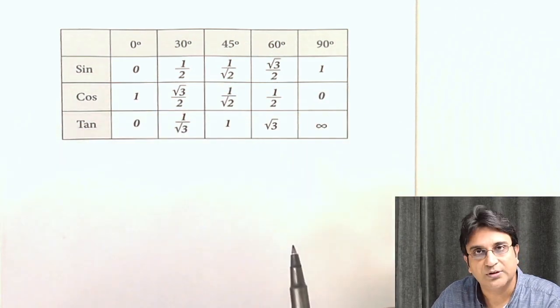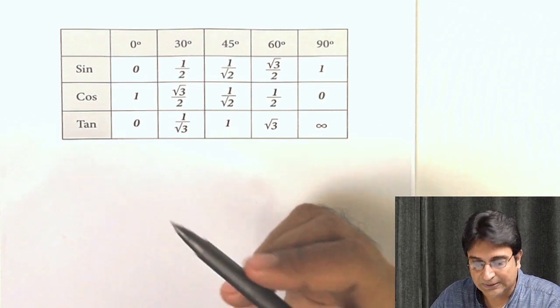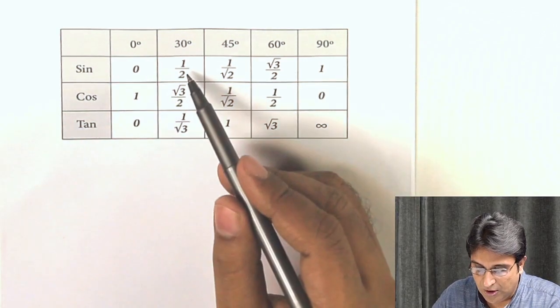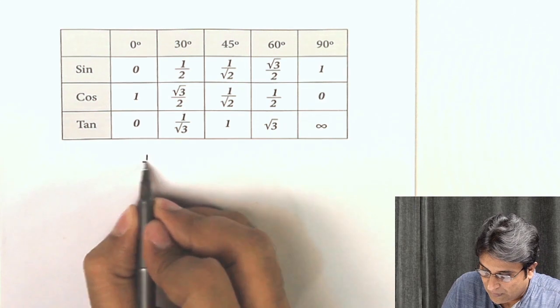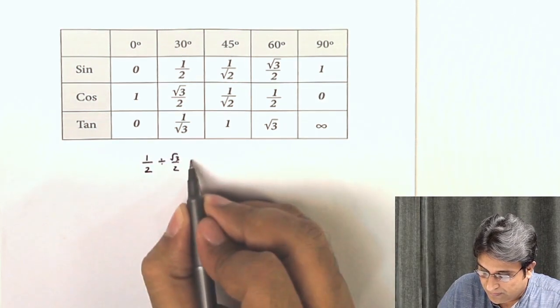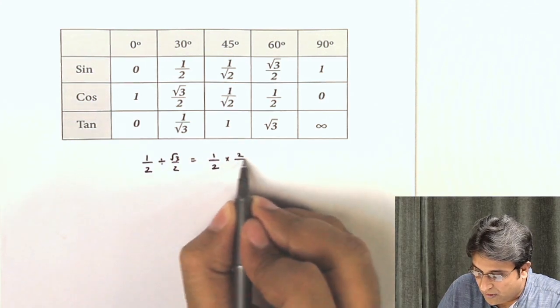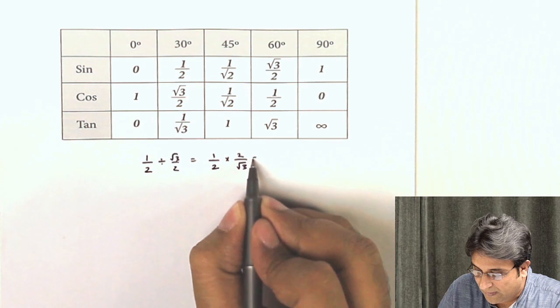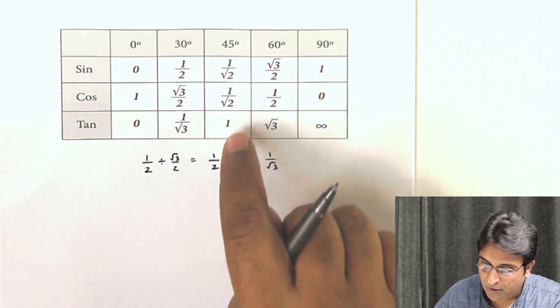Now tan theta is simply sine theta divided by cos theta. So 0 by 1 is 0. 1 by 2 divided by root 3 by 2 is 1 by root 3. You can just see 1 by 2 divided by root 3 by 2, so that will be 1 by 2 into reciprocal of root 3 by 2, and that gives you 1 by root 3.